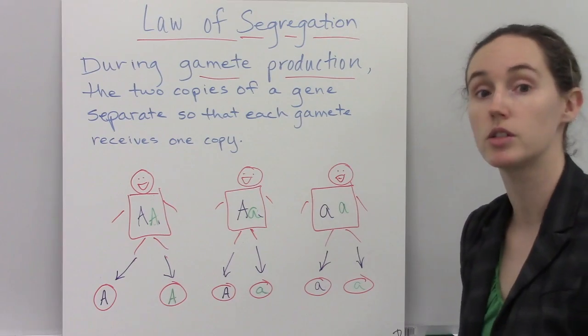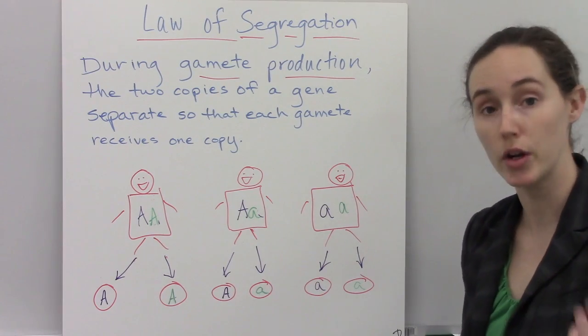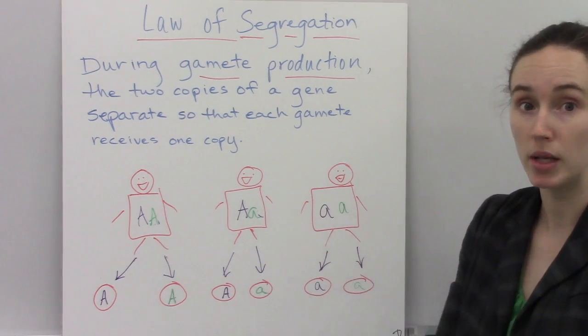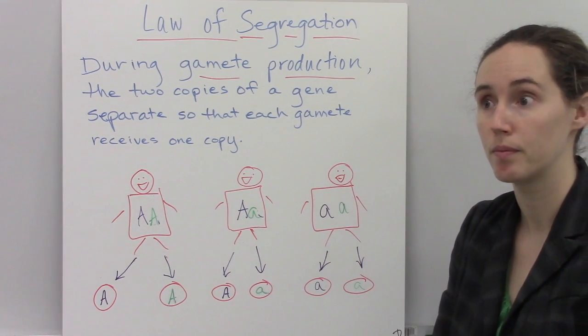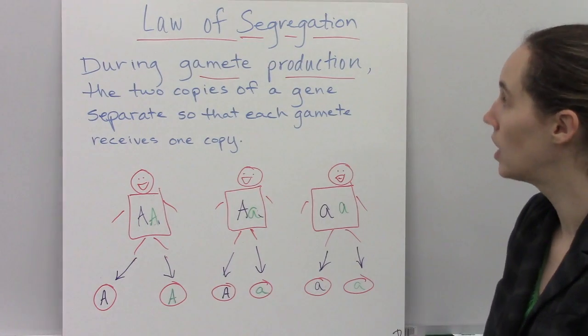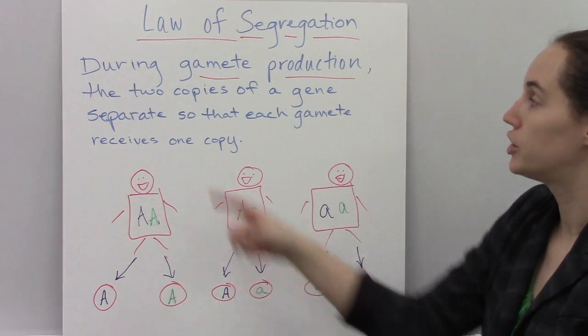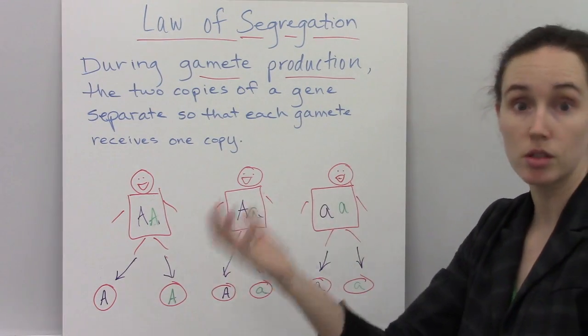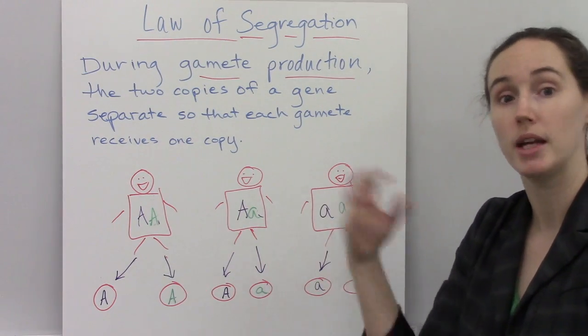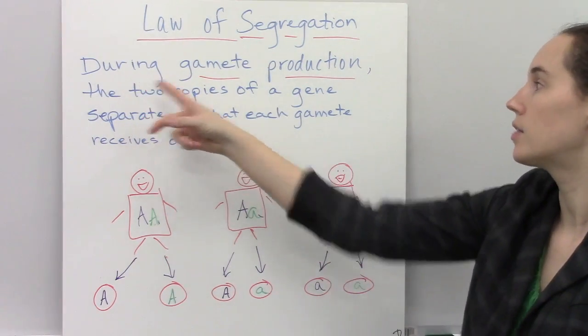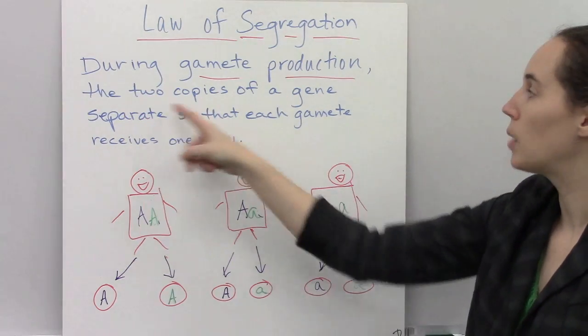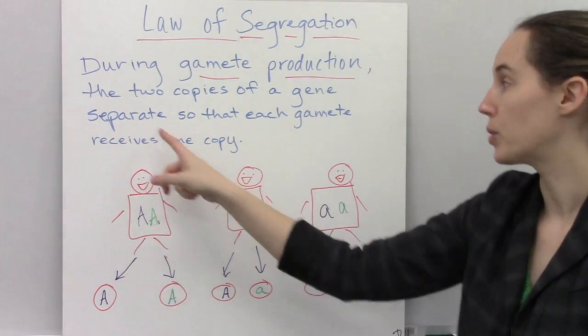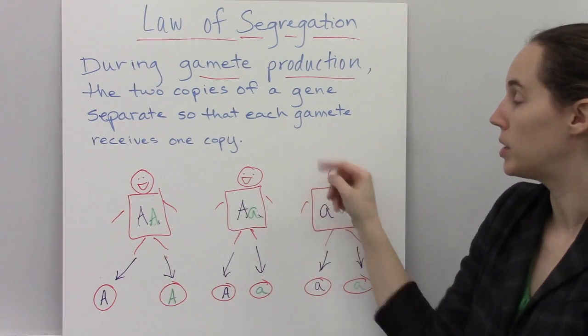Punnett squares are set up based on Gregor Mendel's Law of Segregation. He came up with this as he was doing his pea plant experiments. The Law of Segregation states that during gamete production, which is meiosis—gametes are sperm and egg, your sex cells—so during the production of gametes, the two copies of a gene that parents and every person has will separate, so that each gamete will receive one copy.